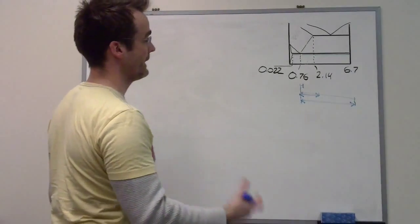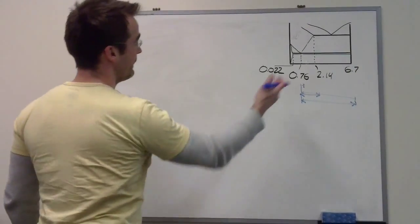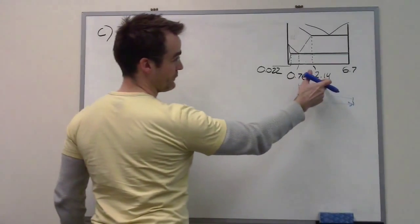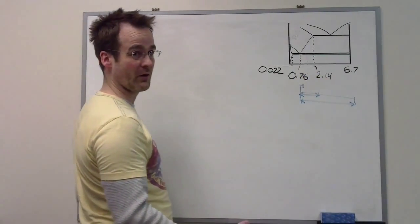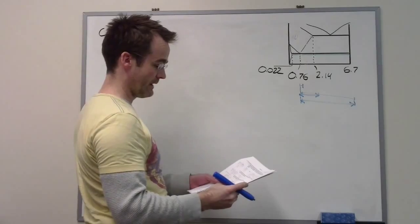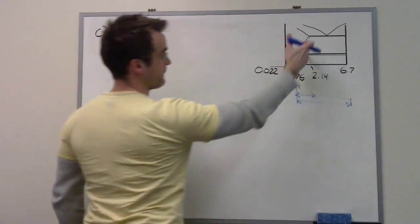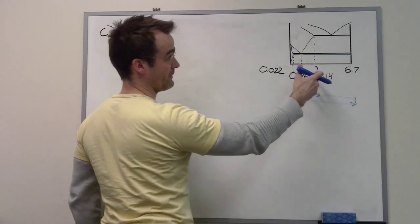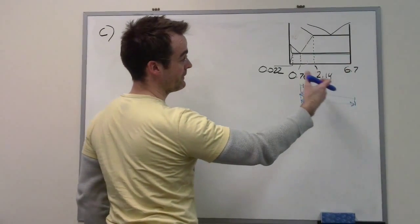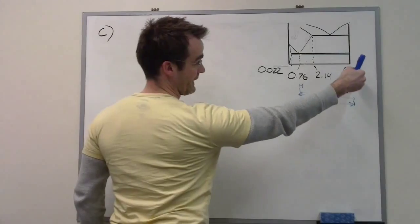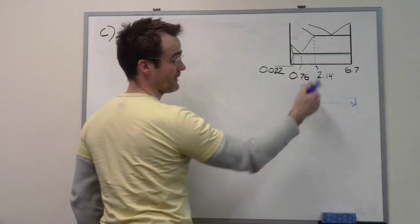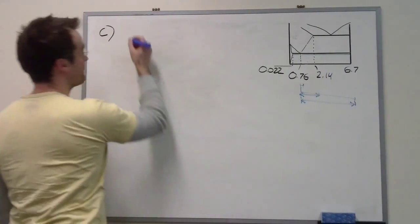What we have to do to answer Part C is use 2.14 as our overall composition and calculate how much of the primary phase, or the cementite, there is. So we're using this as our overall composition, opposite side always, so we're trying to calculate how much of this, so we use this side as I've indicated there.